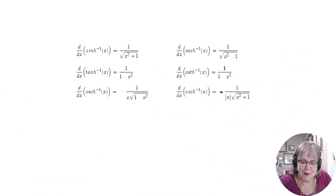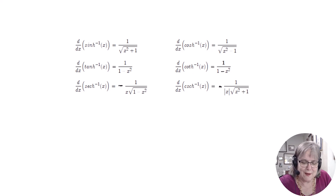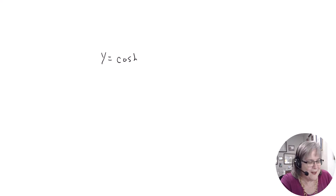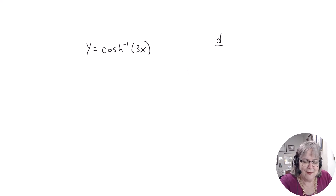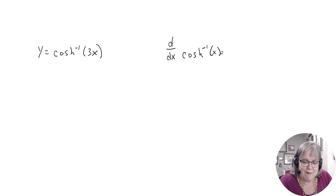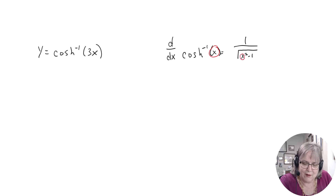These are the derivatives of the inverse hyperbolic functions. The software I use leaves the negatives very light where you can barely see them, but you have a book or something online that has all these. Hopefully your teacher is going to provide you with a little formula sheet for these. Let's do the inverse hyperbolic cosine of 3x — we're going to take the derivative.